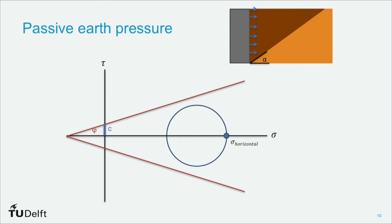The horizontal stress in this case is larger than the vertical stress. And as the horizontal stress increases, so as the wall is pushing against the soil, the Mohr's circle starts to touch the Mohr-Coulomb failure envelope. And as you can see, as it touches here is what's defined as failure.